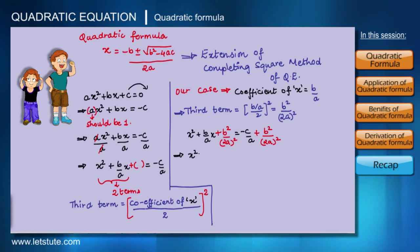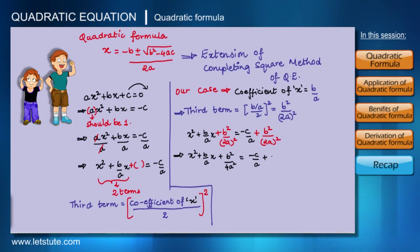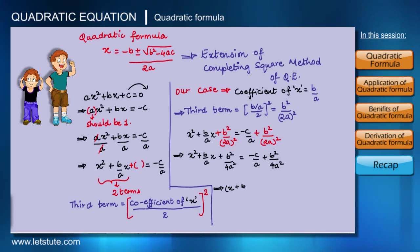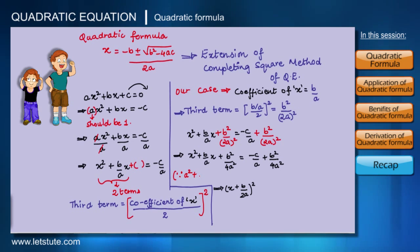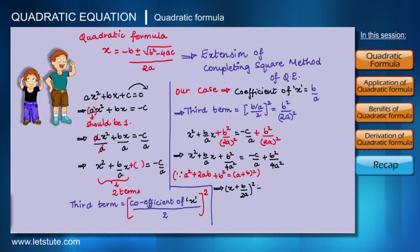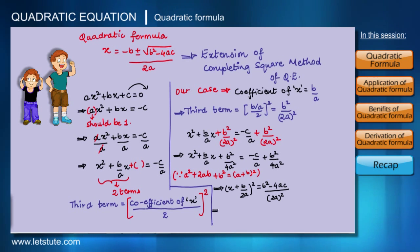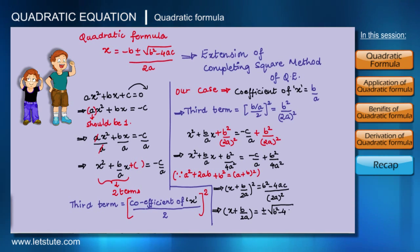The equation becomes x² plus (b/a)x plus b²/(4a²) equals minus c/a plus b²/(4a²). The left-hand side factors as (x plus b/(2a))² using the identity a² plus 2ab plus b² equals (a plus b)². The right-hand side simplifies to (b² minus 4ac)/(4a²). Taking the square root of both sides gives x plus b/(2a) equals plus or minus square root of (b² minus 4ac) divided by 2a.